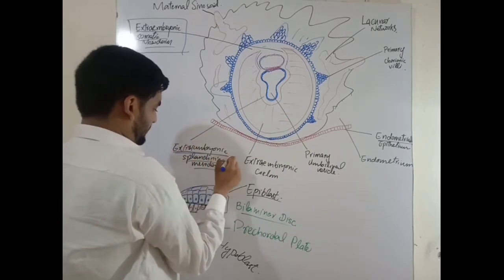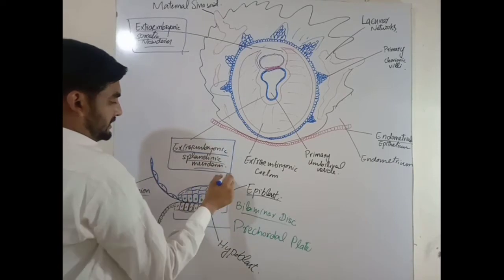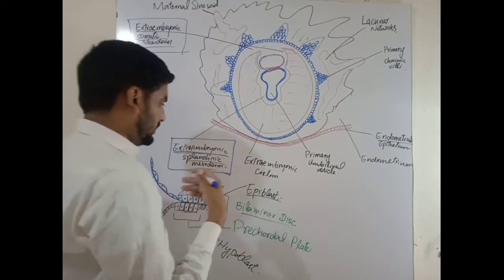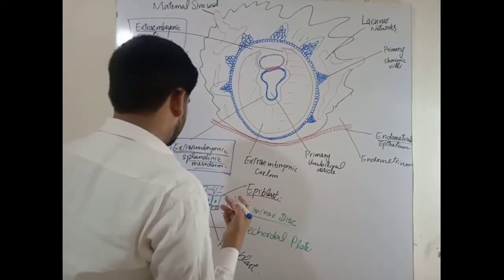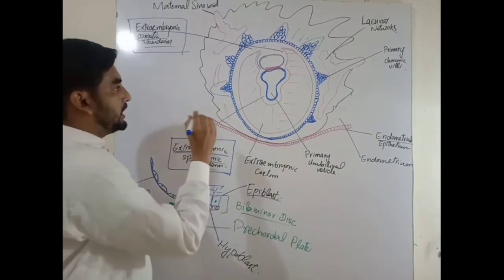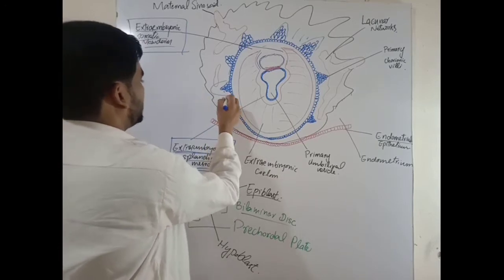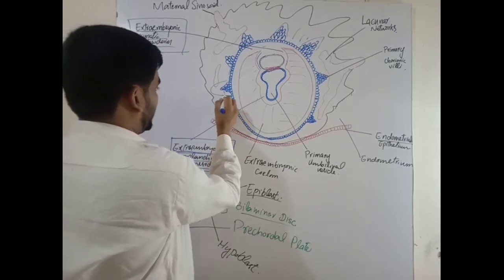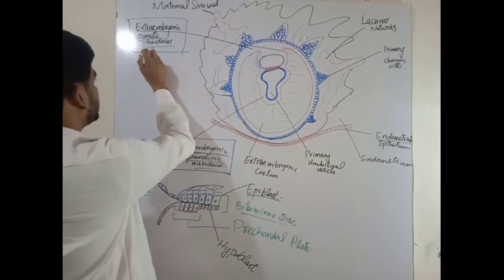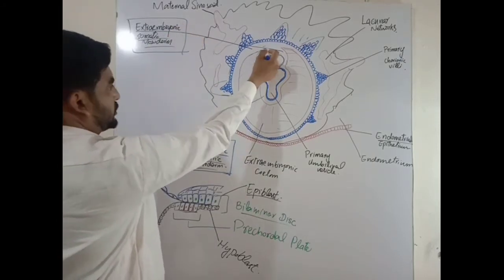The other part surrounding the primary umbilical vesicle is called the extra-embryonic splanchnic mesoderm. We will discuss its derivatives in detail in our next videos. The development of the primary chorionic villi is thought to be induced by the extra-embryonic somatic mesoderm.